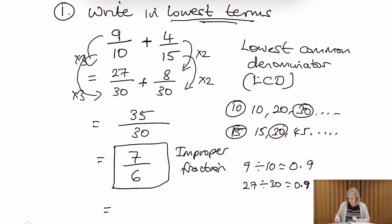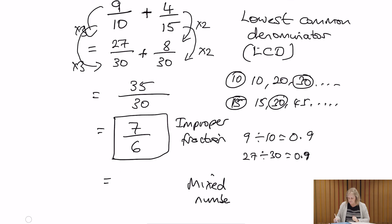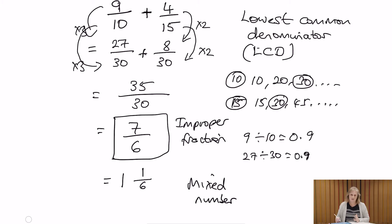If we actually wanted to write it as a mixed number — a whole number and then a proper fraction — we've got 7 over 6, so: how many 6's go into 7? That goes once. Our answer always has the same denominator of 6, so 1 times 6 gives us 6. We've got a 7 in the numerator, so we subtract the 6 from the 7, leaving a remainder of 1. So written as a mixed number it's 1 and 1 over 6 — but an improper fraction would be my preference.